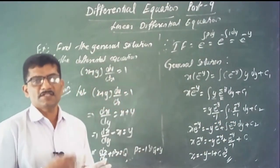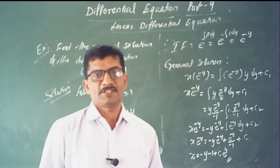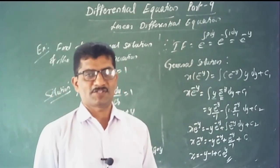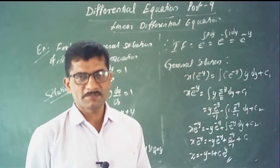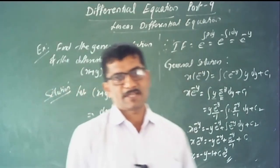Dividing both sides by e to the minus y: x equals minus y minus 1 plus c times e to the y. This is the general solution of the given differential equation. This method is called the linear differential equations method. Thank you.